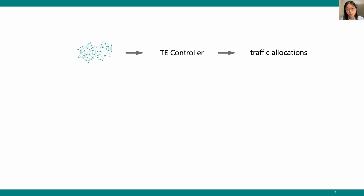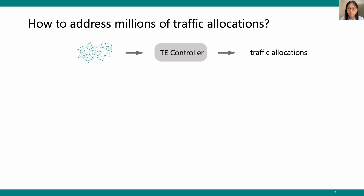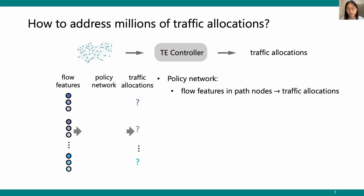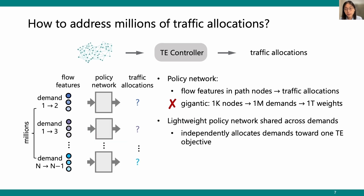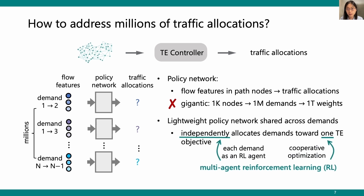The next challenge is the TE controller: in a large network, how do we address millions of traffic allocations? A graph with 1000 nodes can have 1 million demand pairs, resulting in 1 trillion weights in the policy network — too many to learn. Instead, we use a lightweight policy network shared across demands. To learn this policy network, we use multi-agent reinforcement learning, treating each demand as an individual RL agent, with agents working cooperatively to optimize a global TE objective.